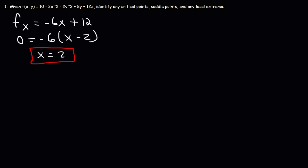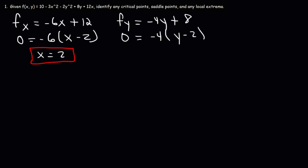Now let's find the partial derivative with respect to y. So 10, negative 3x squared, and 12x will become 0. The derivative of negative 2y squared is negative 4y, and the derivative of 8y is positive 8. Setting f sub y equal to 0 and factoring out a negative 4 gives us y minus 2, so when y is equal to 2, f sub y will be 0. So our point of interest is (2, 2).